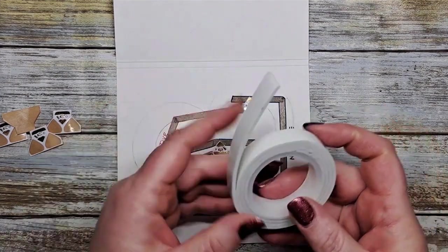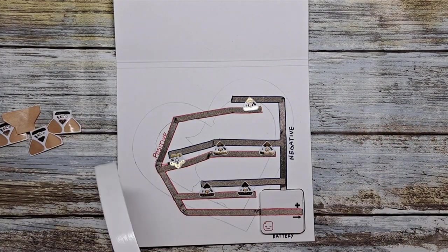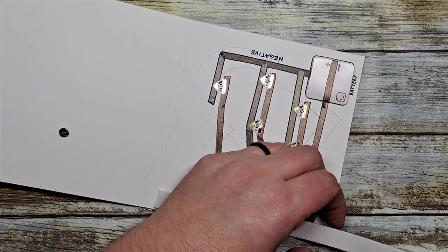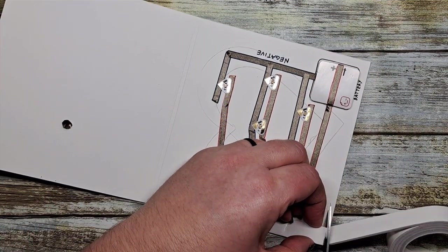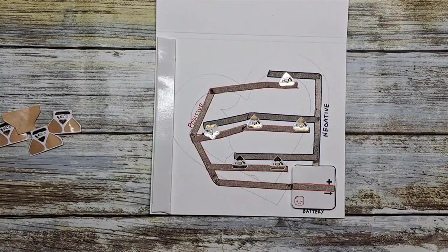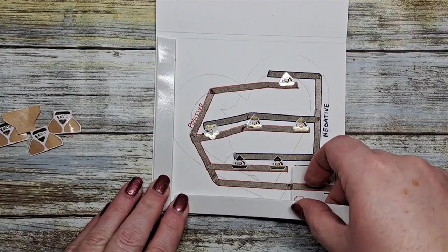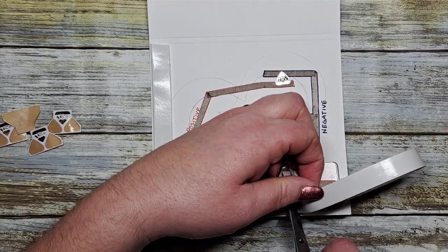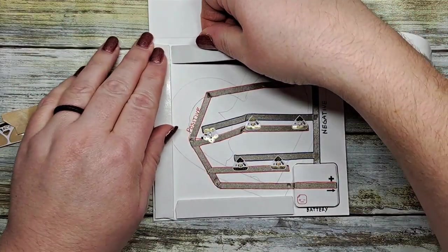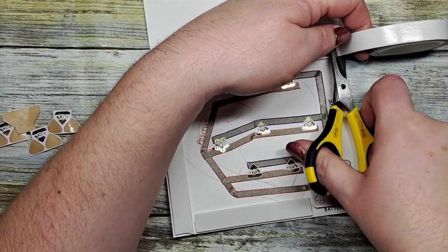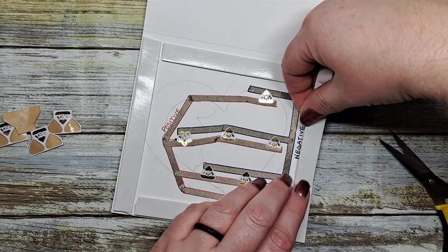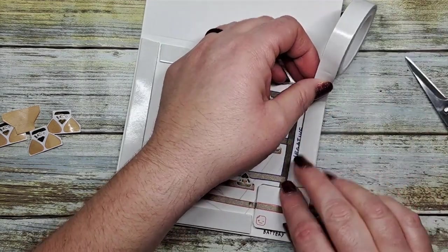And let's finish off with some foam tape. And this just allows that battery holder to not be so bulky. It just makes up for the width of the battery. So we're just going to use our foam tape and go all the way around the borders of the circuit aspect of our card. Quick snip. And one more side.